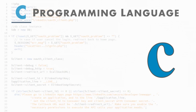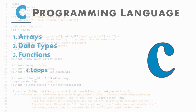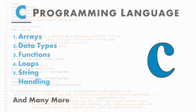C is the most basic as well as most important programming language. In C programming language there are various topics — such as array, data type, functions, loops, string handling, if-else conditions, and many more — where if you have a good command, you can become a perfect web developer.